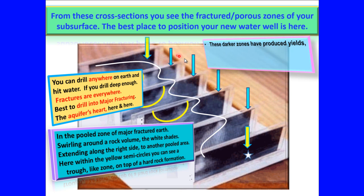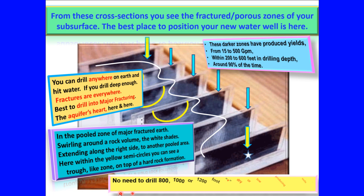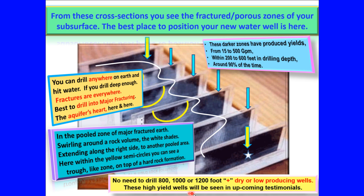These darker zones have produced yields from fifteen to five hundred gallons per minute within two to six hundred feet in drilling depth, around ninety percent of the time. No need to drill eight hundred, one thousand, or twelve hundred foot plus dry or low producing wells. These high yield wells will be seen in upcoming testimonials.